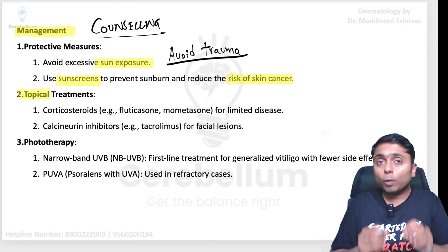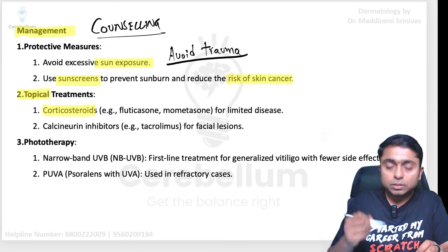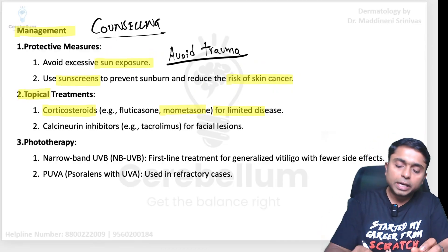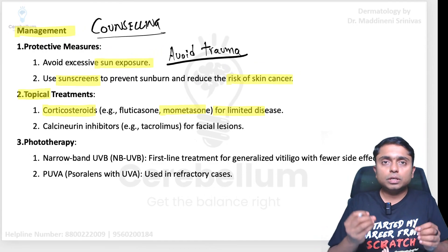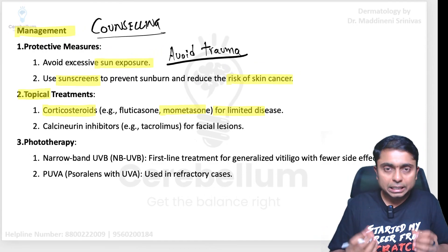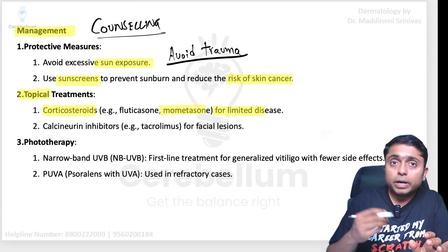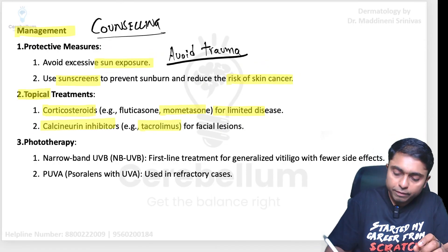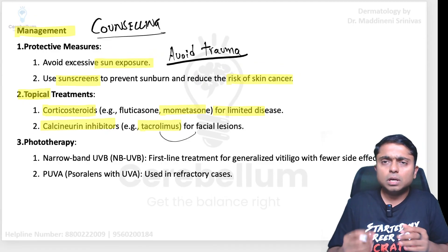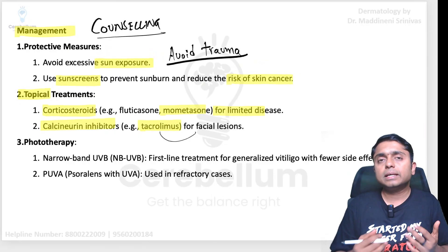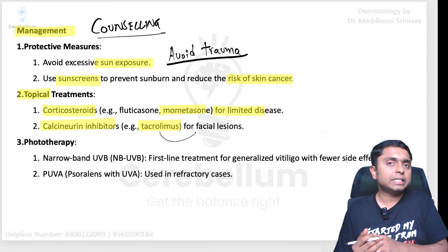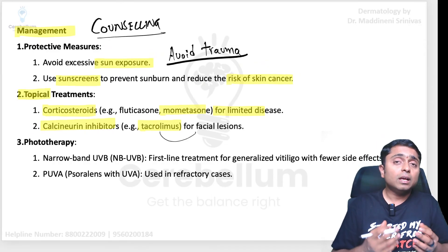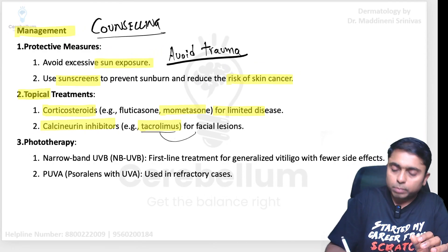For topical treatments, corticosteroids are used for limited disease — when there are one or two lesions manageable with topical agents. Calcineurin inhibitors such as tacrolimus can also be used, especially for facial lesions, because topical steroids over the face can cause complications like thinning of the facial skin, telangiectasia, and hair growth. Therefore, tacrolimus and calcineurin inhibitors are preferred for facial vitiligo.